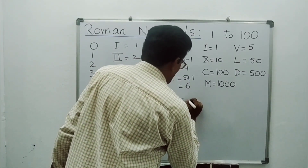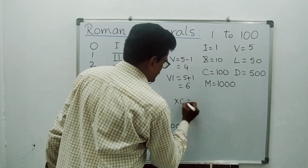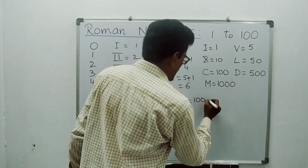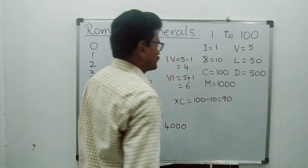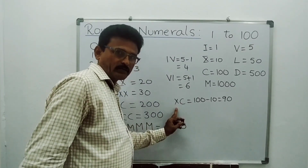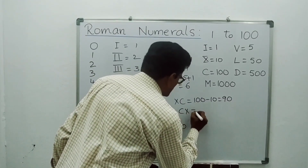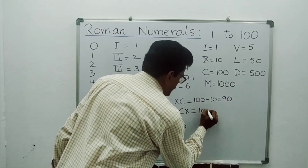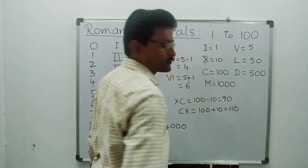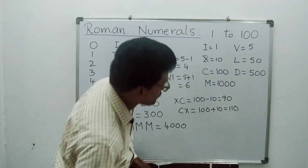For example, XC means C is the bigger one at 100, with X on the left side — so 100 minus 10 = 90. CX means 100 with X on the right side, so you add: 100 plus 10 = 110. There are some rules for subtraction — only 6 subtractions are possible.